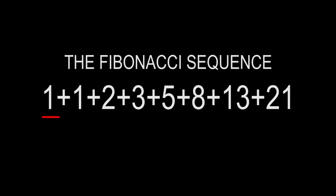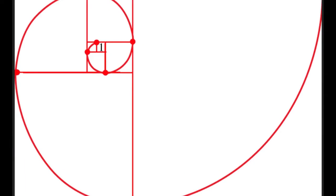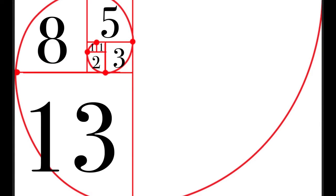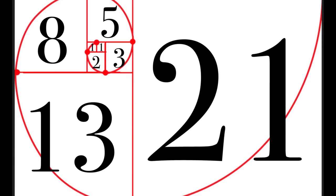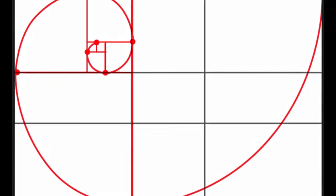For example, one plus one equals two, one plus two is three, two plus three is five, and so on and so forth. To put that into a physical form and how it relates to framing, you would take a one by one square and place that next to another one by one square. Next to that you would put a two by two square, a three by three square, five by five, eight by eight, thirteen by thirteen, twenty one by twenty one. With these squares together you get the golden spiral.